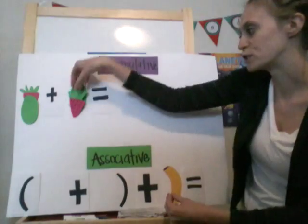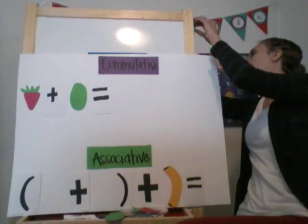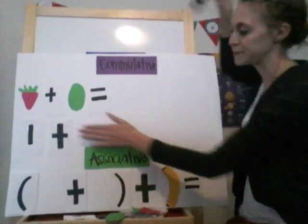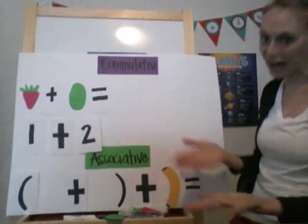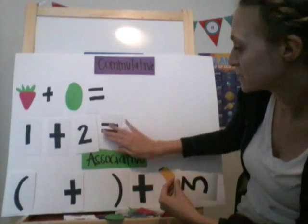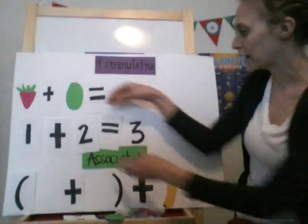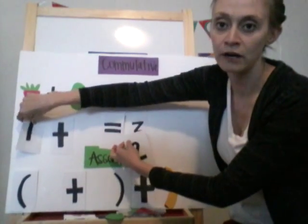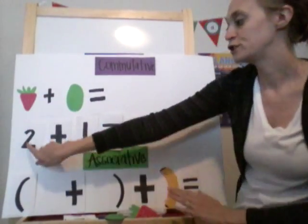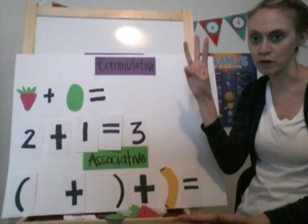Let's look at it with numbers — it may make a little bit more sense. Let's say that I have one plus two. I know that one plus two equals three, because I have one thing, I add two more, that equals three. What if I switched the order of the numbers I'm adding together? So now I have two plus one. Does that still equal three? Two plus one — yeah, that still equals three.